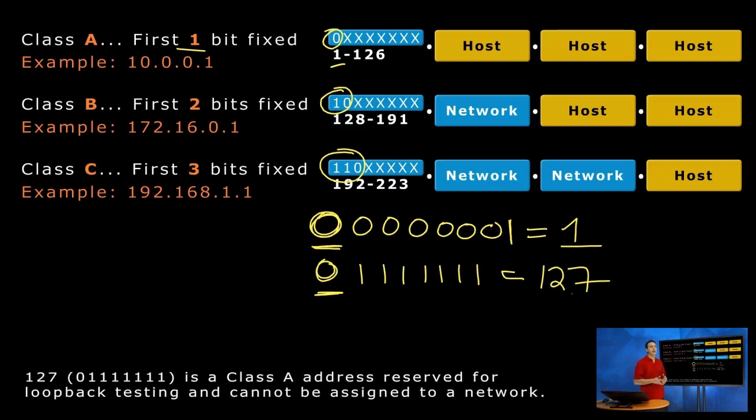So our range for Class A is one to 127. But notice it says 126 here. The reason why is we cannot assign 127 addresses to end station. 127 addresses, as you can see at the bottom, are reserved for loopback testing.